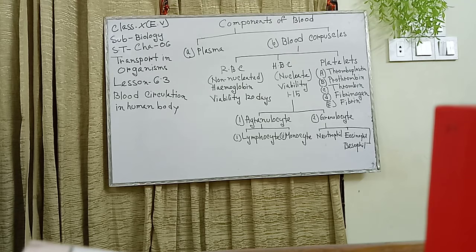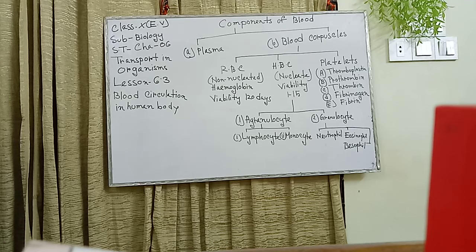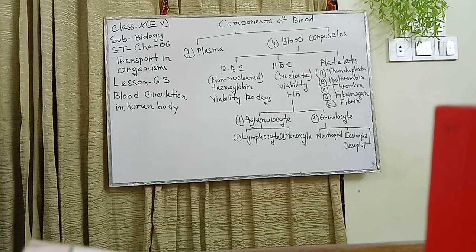First, blood circulation in the human body — what is the blood circulatory system? The system through which blood is transported to organs and different parts of the body is called the blood circulatory system. It distributes nutrients and oxygen throughout the body and removes body waste. The flow of blood in humans is limited to the inside of blood vessels and the heart. This type of circulatory system is called a closed circulatory system.